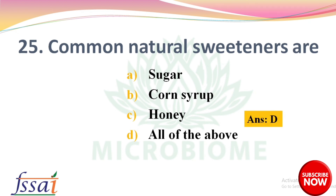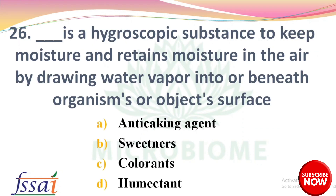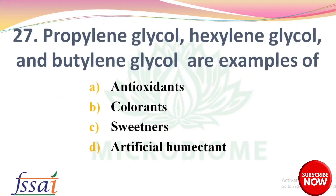Next question: dash is a hygroscopic substance that keeps moisture and retains moisture in the air by drawing water vapor into or beneath the organism or object surface — options: anti-caking agent, sweeteners, colorants, humectant. The right answer is option D, humectant. Next, propylene glycol and butylene glycol are examples of — options: antioxidants, colorants, sweeteners, artificial humectant. The right answer is option D, artificial humectant.